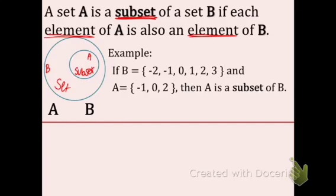Here's an example. B is equal to negative 2, negative 1, 0, 1, 2, 3, and A is these values. As you can see, negative 1 is in B, 0 is in B, and 2 is in B. So that means that A is a subset of B, because all of the elements of A are also elements of B.